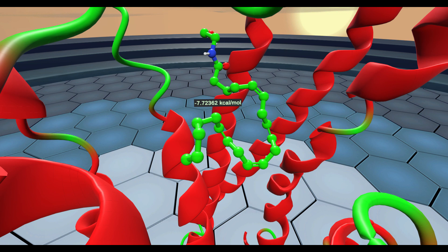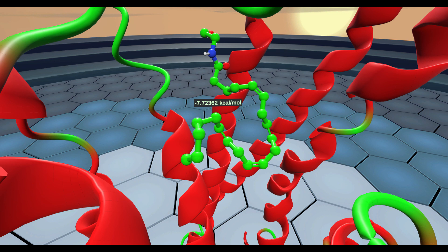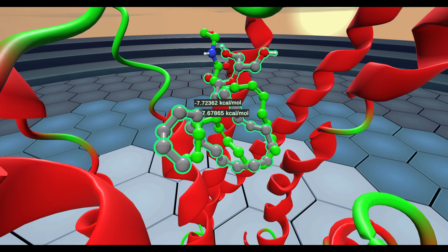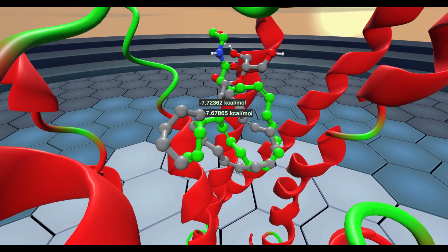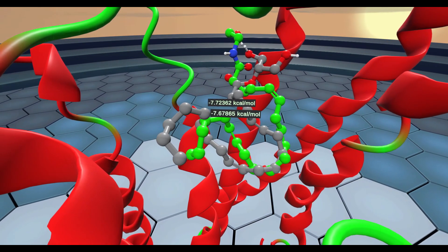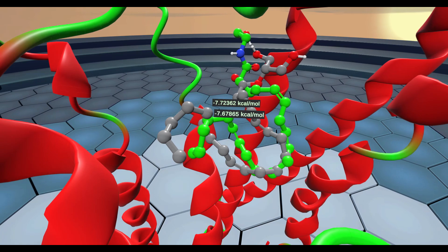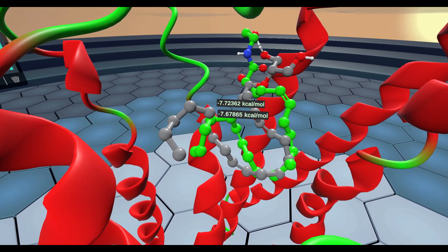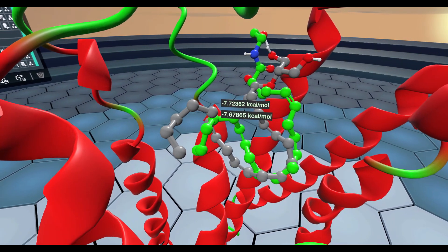If we compare that to arachidonylglycerol, I'll overlay the binding poses. Although these compounds both bind to CB-1 receptor at the orthosteric site, they actually fit inside the receptor with different conformations.